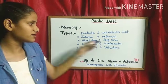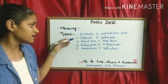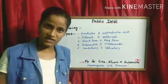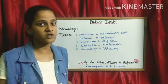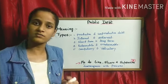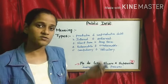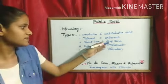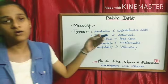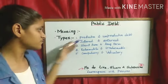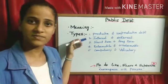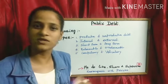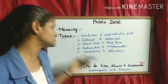When we come to short-term and long-term debt, the government is going to borrow money for a short period of time or a long period of time. When we come to short period of time, it may be six months. When we come to long period of time, it is more than one year.